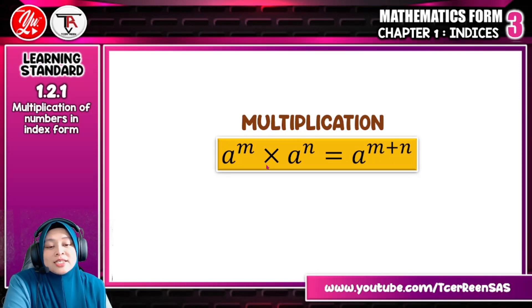You can see here, times or multiply for index numbers which have the same base, they can be added here. Bila asas sama, index dia kamu boleh tambah. But the operation between those two numbers must be multiplied. Kalau multiply, dia punya index akan jadi tambah. Then, let us look at some examples.